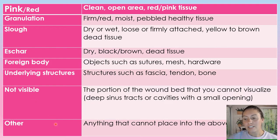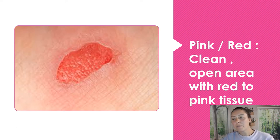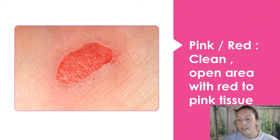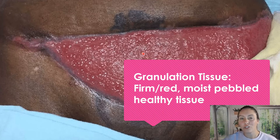And 'other' is just anything you can't put into any of these categories — you would just have to describe it. Now let's look at some pictures. Pink and red — this is a nice healthy wound, you can see it's just pink here. Granulation tissue — you can see it almost looks firm, you'll be able to feel that firmness.